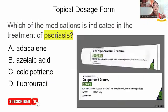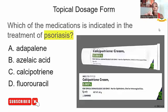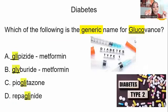Back to content: topical dosage form. The question asks which medication is indicated for the treatment of psoriasis — a condition of the skin. The answer is C. Topical dosage forms are always applied to the skin. When entering this in the pharmacy, you will type 'apply to skin' and follow the doctor's directions.